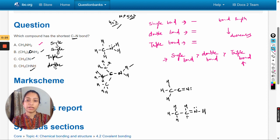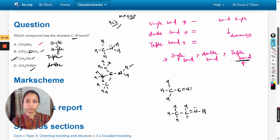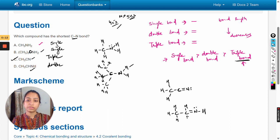As we have already discussed, triple bond is the shortest, so the answer will be option C. Let's check the mark scheme. Yes, CH3CN is the right option. Thank you so much for watching and all the best, take care.